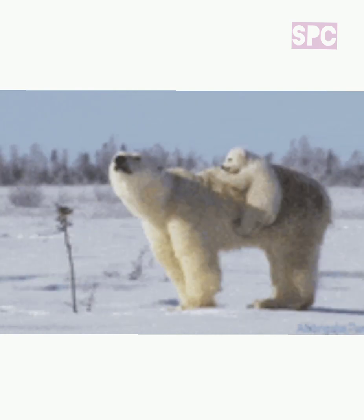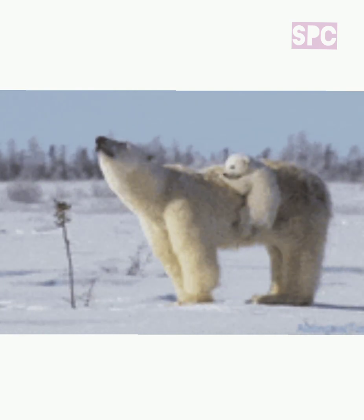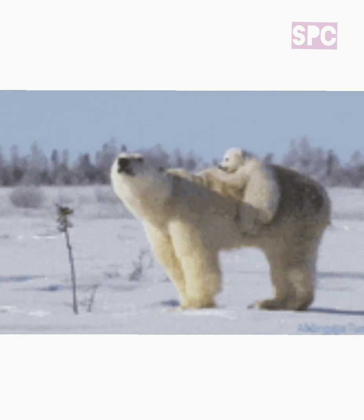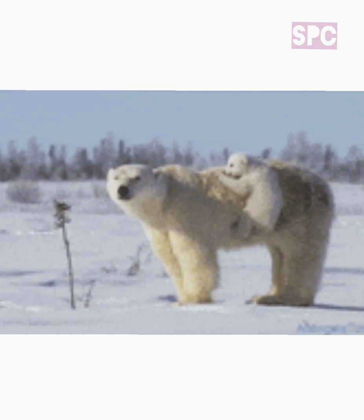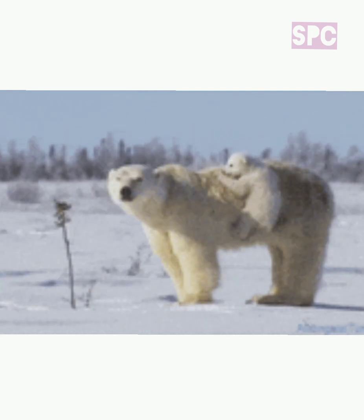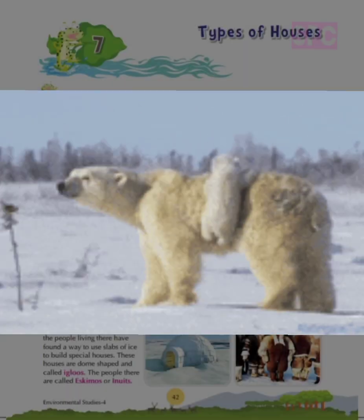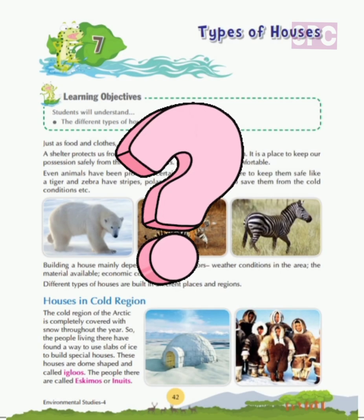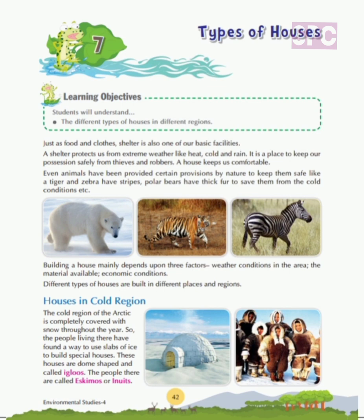The stripes of a zebra help it to get camouflaged in the tall grasses to get protected from the lion. The white colour of the polar bear helps it to camouflage from its prey on snow and ice. Also, its thick layers of fat and fur insulate its body against the cold. Can you name an animal which changes the colour of its fur? In spring and summer it has a dark coat, while in winters its coat turns white to match the surrounding snow.